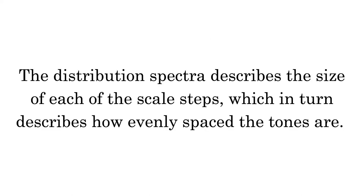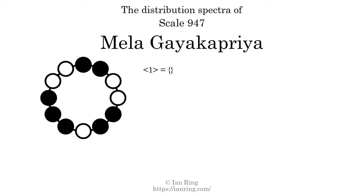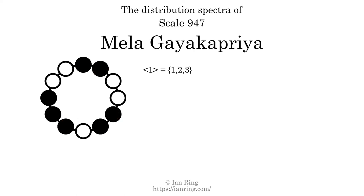The distribution spectra describes the size of each of the scale steps, which in turn describes how evenly spaced the tones are. A generic interval is how many scale steps are between one tone and another. A specific interval is how many semitones apart they are. The generic interval of one scale step comes in three different specific interval sizes: one semitone, two semitones, and three semitones. The spectrum width of this generic interval is the highest, three, minus the lowest, one, which equals two.